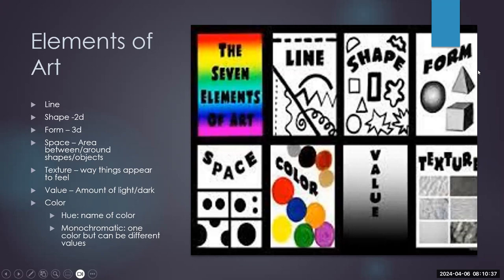Form is our 3D shapes. Unlike shapes which are flat, these have depth and volume. These forms are created through the use of light, shadows, and perspective, giving objects a sense of solidity and presence. Value refers to the lightness or darkness of tones or colors within the artwork. It's created by the contrast between light and shadow, and it's essential for defining shapes, creating volume, and establishing mood or atmosphere. Value is described on a scale from white, the lightest, to black, with various shades of gray in between.